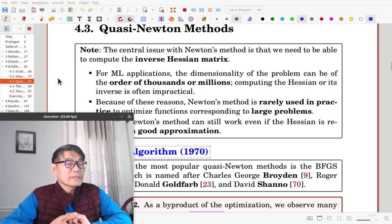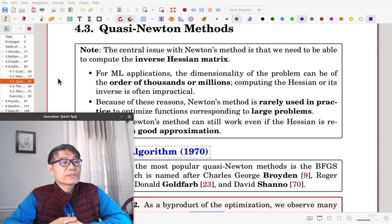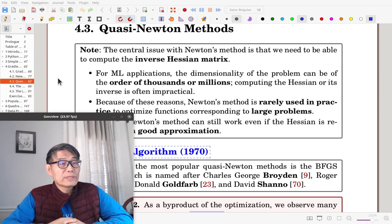It is Section 4.3, Quasi-Newton Methods. The major issue with Newton's method is that we need to compute the inverse Hessian matrix.